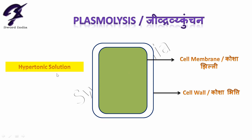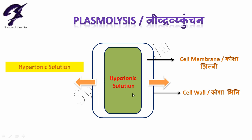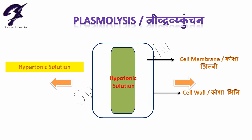— agar is padap kosha ko hum hypertonic solution, yani kam jali sandrata wale kshetra mein rakh dein, toh jo iska protoplasm hai woh hypotonic ho jayega, kyunki uske bahar cell ke bahari vatavaran se jali sandrata adhik hai. As a result, this protoplasm will shrink, because in osmosis the movement of water molecules is always from hypotonic to hypertonic solution. Pani protoplasm ke andar se bahar jayega aur jo protoplasm andar hai woh sikar jayega.